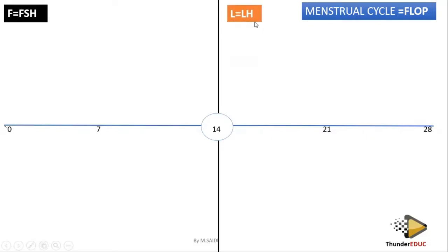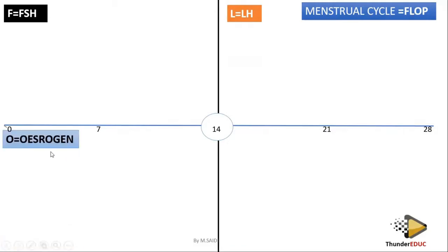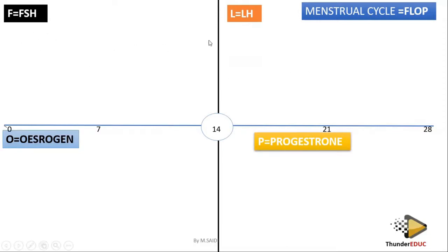L is luteinizing hormone. O is estrogen. P is progesterone. By taking the first letter of each — follicle-stimulating hormone, luteinizing hormone, estrogen, progesterone — it makes the word FLOP. So you have one, two, three, four boxes. That's how you name them, and together they make what you call a block.